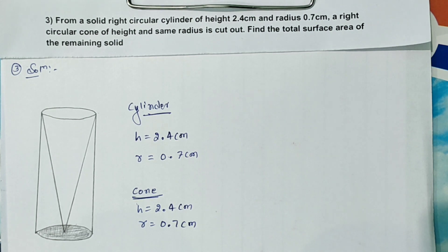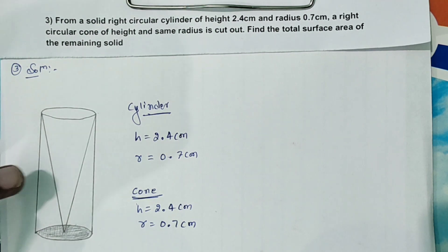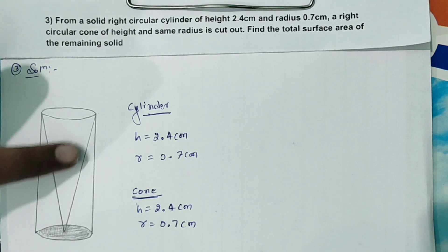Find the total surface area of the remaining solid. Very simple one. Both the cylinder as well as cone, both are having the same radius and same base. And from the cylinder, this cone is taken out.